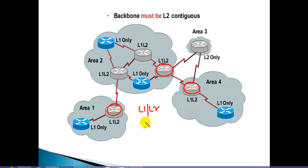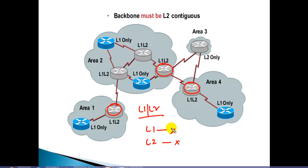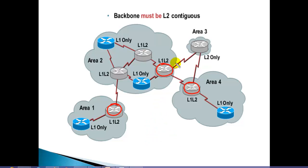If you change them to Level 1 only, they will not exchange routes with routers in different areas. If you change them to Level 2 only, it will affect the communication and neighborship between routers inside the areas. So they must be configured as Level 1/Level 2 — that is mandatory.